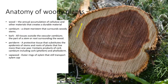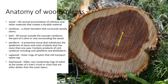We also have what we call the sapwood. The white that you see here is the sapwood — these are rings of xylem that still transport xylem sap. We have what we call the heartwood. The heartwood is older, non-conducting rings of xylem at the center of the tree's trunk and roots that are often darker than the outer layers.